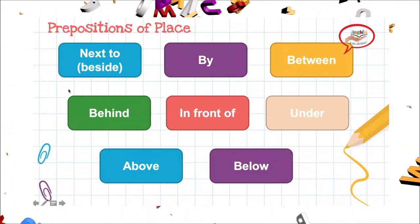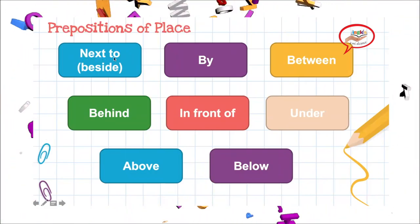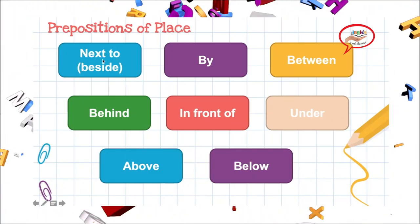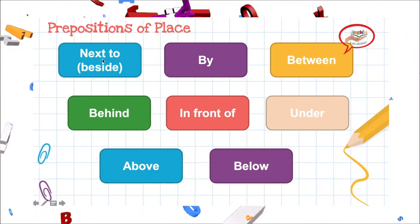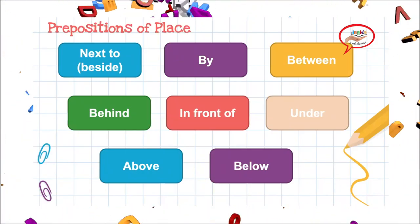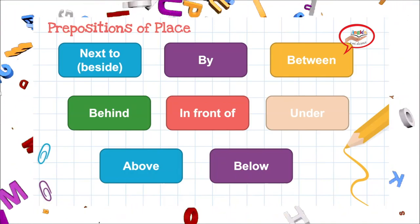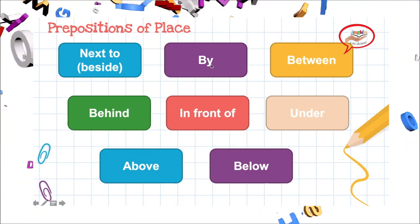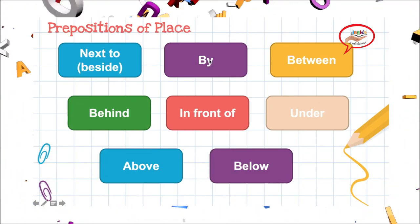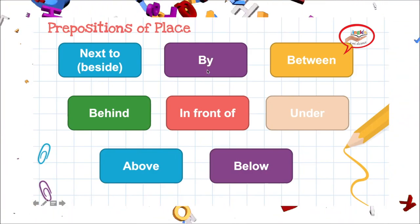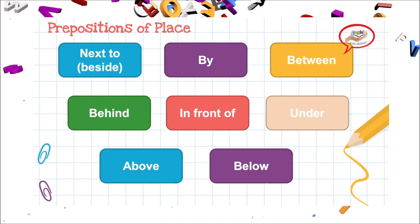First one. La primera. Tenemos 'next to'. Next to. Como pueden ver, yo pronuncio muy bien la T porque quiero que ustedes escuchen ese sonido que la T nos proporciona. Next to. Tenemos 'by'. La Y en este caso hace una función de I, entonces por eso la pronunciamos: by.